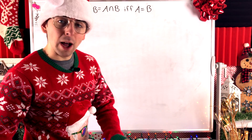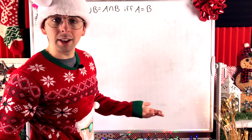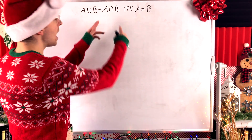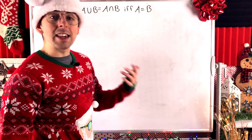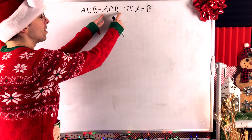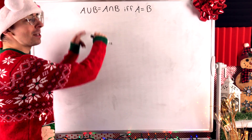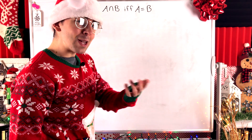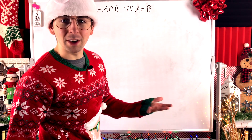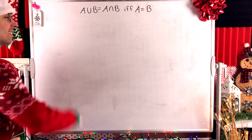Why is this so obvious? Well, A union B is the collection of all elements from A as well as the elements from B. A intersect B is the elements they have in common. So if the elements that A and B have in common are all of the elements of A as well as all the elements of B, that means they have all their elements in common — they're certainly the same set.